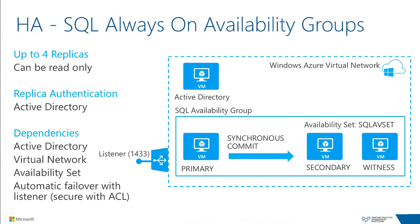The first scenario is using SQL Server Always On availability groups within Windows Azure — now fully supported even with a listener. Always On allows a primary with multiple secondary replicas; the secondaries can be used in read-only mode for reporting workloads. Authentication between nodes requires Active Directory with domain accounts. High-level requirements include creating a virtual network, ensuring Active Directory is available, and deploying nodes into an availability set. The primary replica performs synchronous commits to the secondary so databases are available for automatic failover through the listener, and all SQL nodes belong to the same availability set to ensure redundancy.